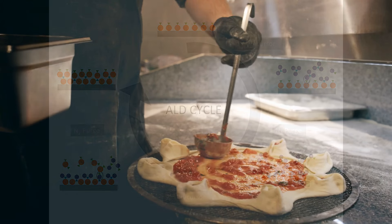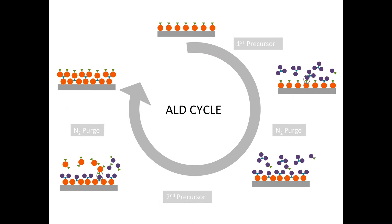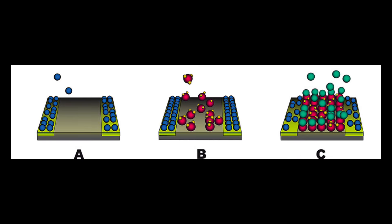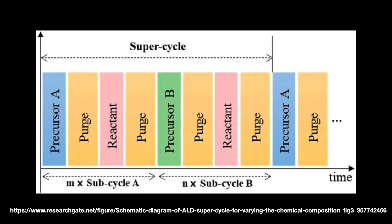The basic form of ALD is to have these two alternating A and B steps. But more advanced versions of the technique can have multiple steps. The additional steps of this ABC ALD cycle can be used to modify the temperature environment or the material's properties. You can also have ALD super cycles with multiple ALD cycles to get a particular thin film.